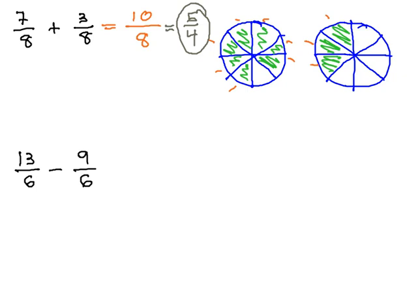We can do the exact same concept with subtraction, in that if you've got 13 slices that are a sixth of the pie each, and you take 9 of those slices away, 13 minus 9 will give you 4 slices left. Each slice is still a sixth of the pie. And then again, we could reduce by dividing by 2 to get 2 thirds.